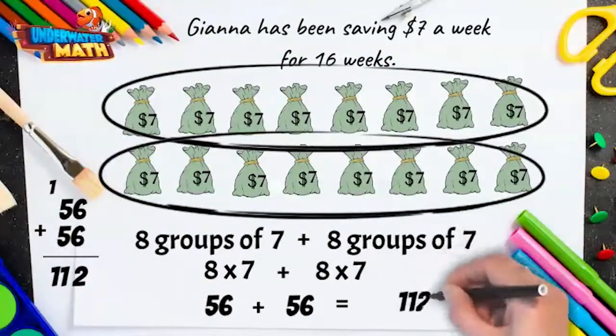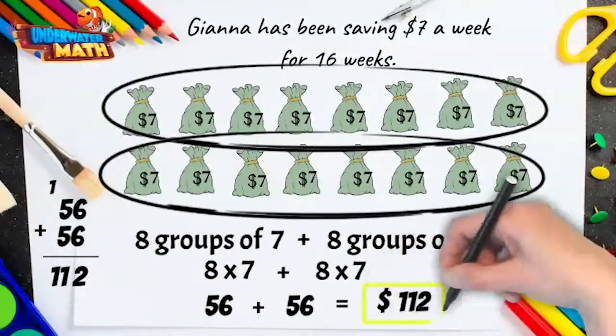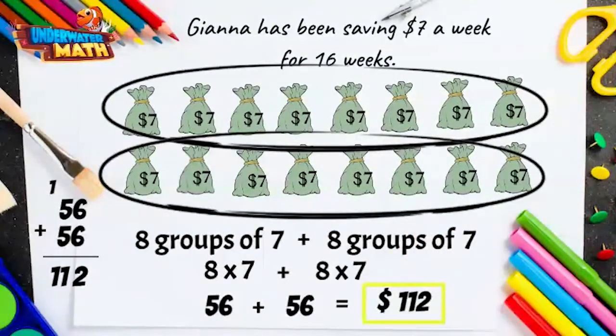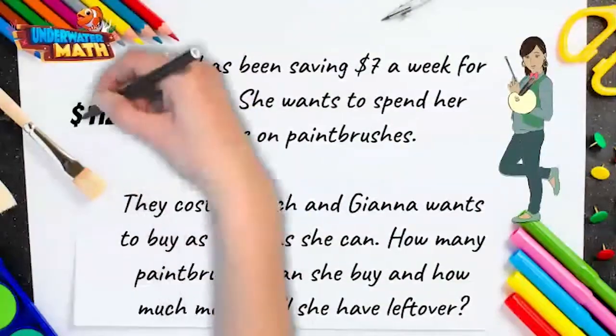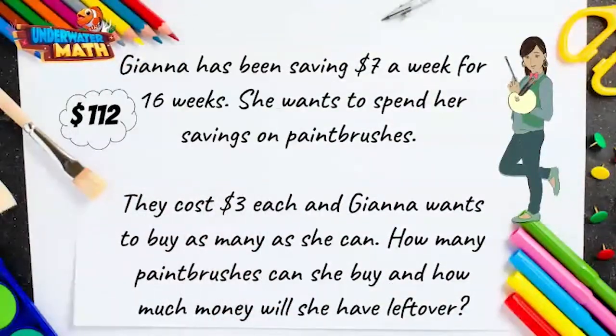That gets us to 112. Gianna has saved 112 dollars — spectacular! Now we need to use division to find out how many three-dollar paintbrushes she can get with her savings.